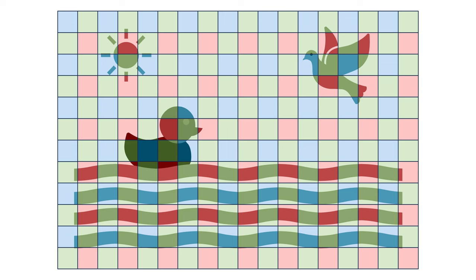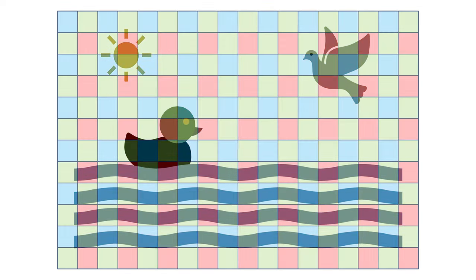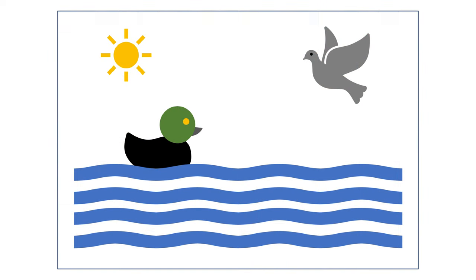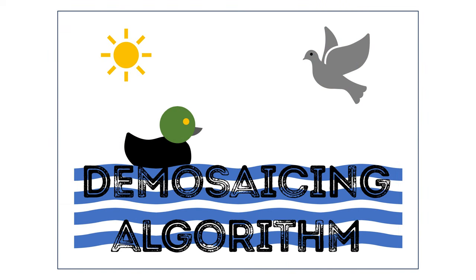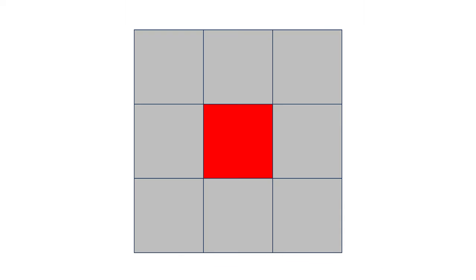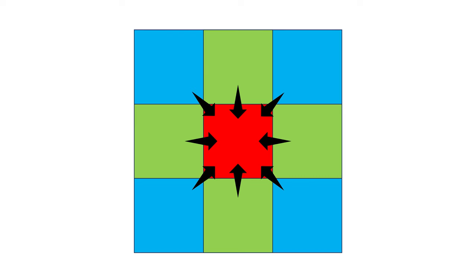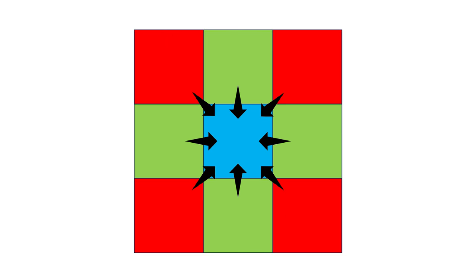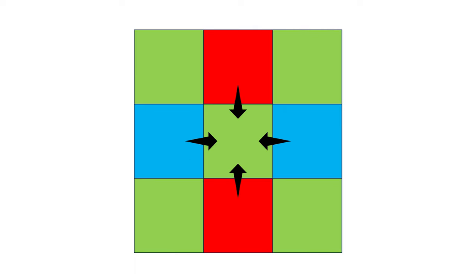So if photo editing software used purely the colour information captured in the RAW file, your photo would look like a mosaic made up of reds, greens, and blues. The software therefore has to apply an algorithm to work out the missing information, and that's called the demosaicing algorithm. For each red part of the mosaic it uses the adjacent greens and blues to work out the missing colour information, and likewise for the missing blues and missing greens.